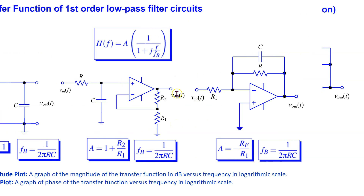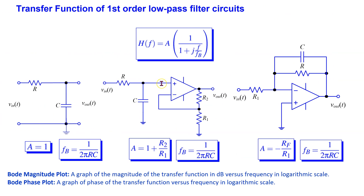The easiest way to characterize the behavior of a low pass filter circuit is to find its transfer function. Recall from circuit theory that the transfer function tells you how the output of a circuit is related to the input as a function of frequency. For first order low pass filter circuits, the transfer function can be expressed in a general form where A is the gain and FB is the break or cutoff frequency.